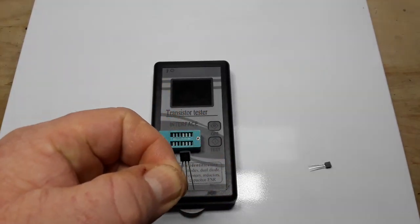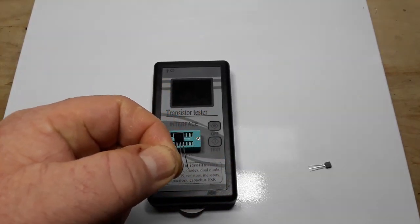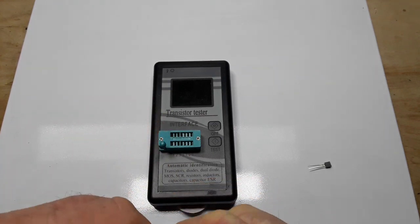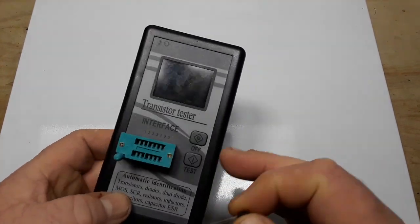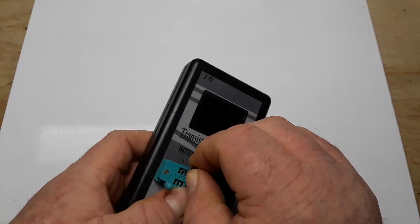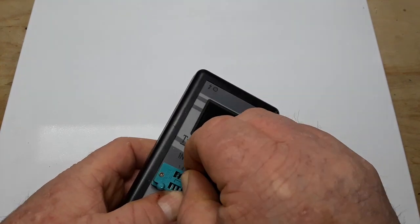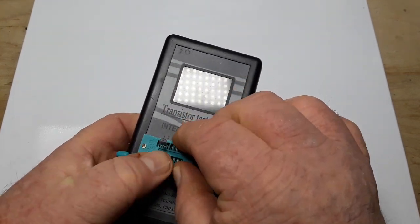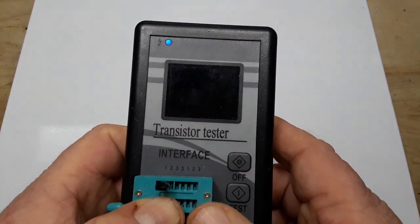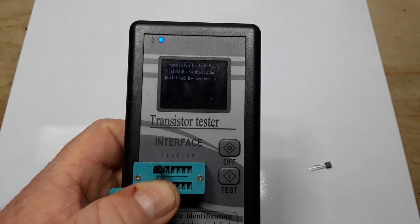Now today we're going to be using BC547 NPN transistors. Very common type, low power, high frequency transistor. So I'm going to put it in the tester here, clamp it down, and we'll hit the test button, see what she says.